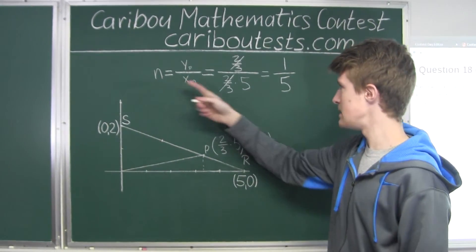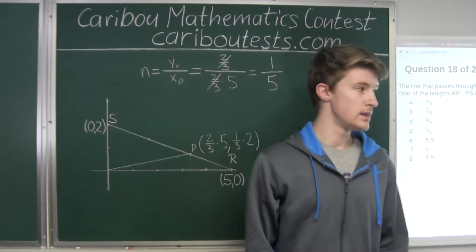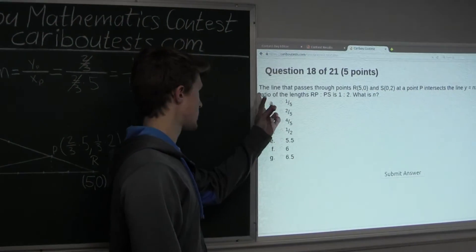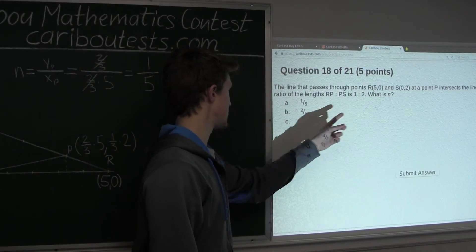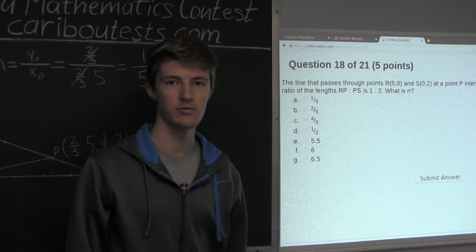Therefore, we know N equals 1 over 5, and that is a slope. And therefore, the answer, the correct option for this question, what is N, is option A, 1 over 5.